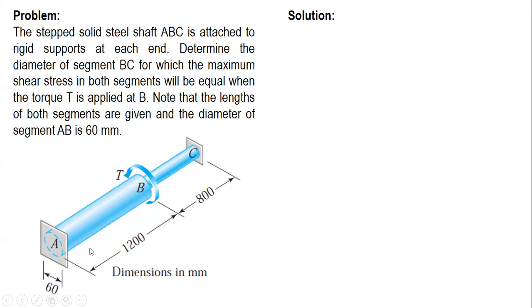Now for this setup, if the two supports are fixed or rigid supports, then the angle of twist for segment AB is equal to the angle of twist for BC. So theta AB is equal to theta BC. If we have rigid supports for two segments. So we compare the expression for angle of twist for AB and BC using this formula.